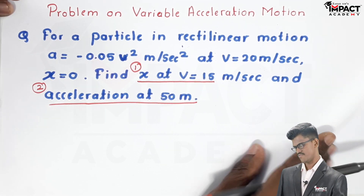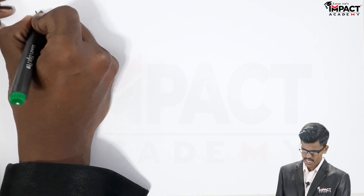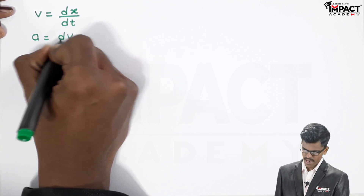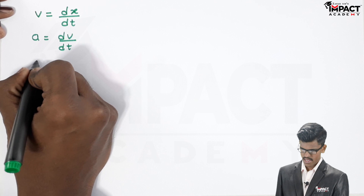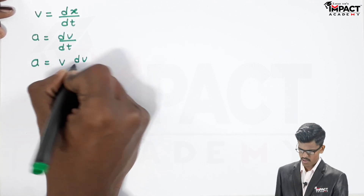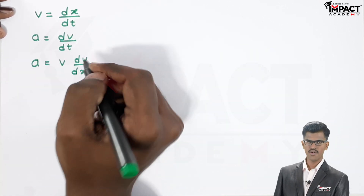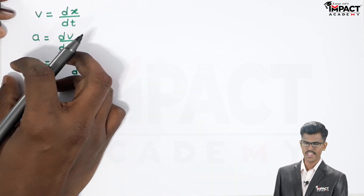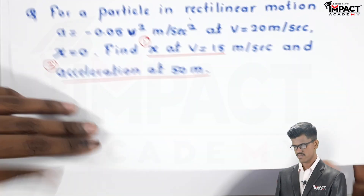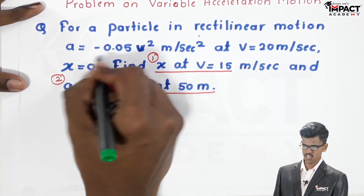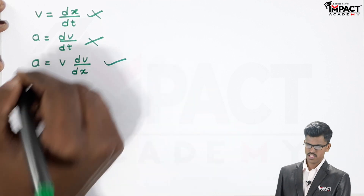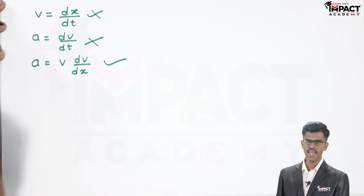So let's start the solution. We know three formulas: v equals dx/dt, a equals dv/dt, and a equals v·dv/dx. We use the first two when velocity or acceleration is a function of t. But in this question, the acceleration is a function of v, so we can't use those. We use a equals v·dv/dx.